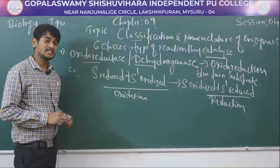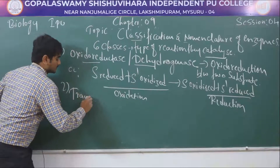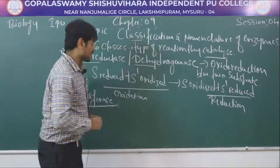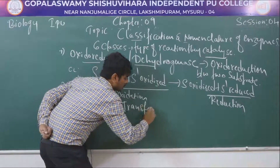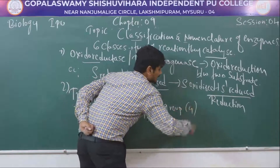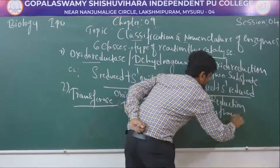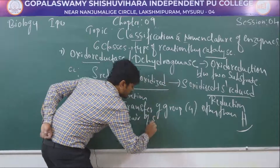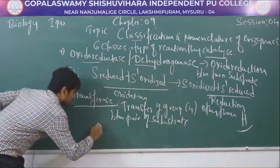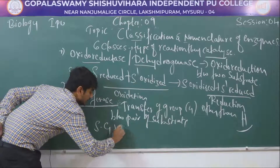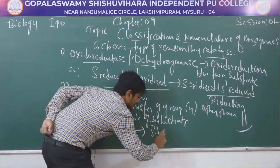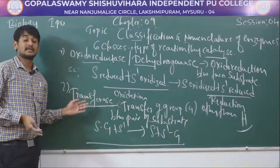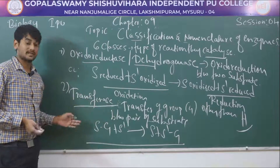The next one is transferase. This enzyme catalyzes the transfer of a group, other than hydrogen, between a pair of substrates. For example: substrate-G plus S-prime gives S plus S-prime-G. This is all about transferase enzyme.